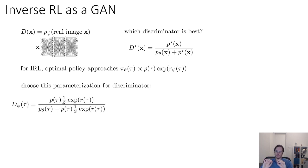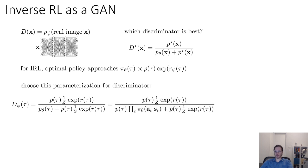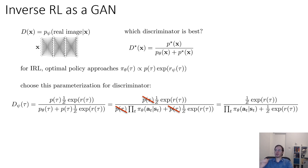What we're going to do is choose this parametrization for our discriminator. We say the discriminator equals p of tau times (1/Z) times the exponential reward — which is just the optimal policy distribution — divided by p_theta of tau plus p of tau times (1/Z) times the exponential reward. We've basically directly used the formula for the optimal discriminator, replacing p* with p of tau times the exponential reward, which is reasonable because that's what we'd expect to get at convergence. If we expand the equation of p_theta of tau, the trajectory probabilities containing all initial state and dynamics terms will cancel out, leaving a discriminator of the form (1/Z times the exponential reward) divided by the product of the policy's probabilities plus (1/Z times the exponential reward).